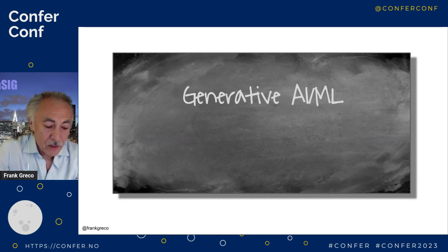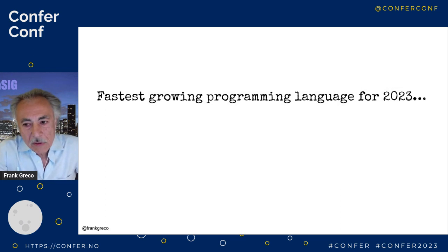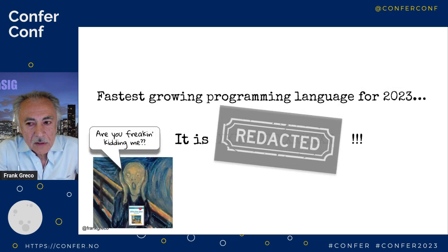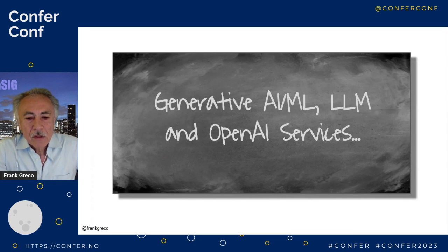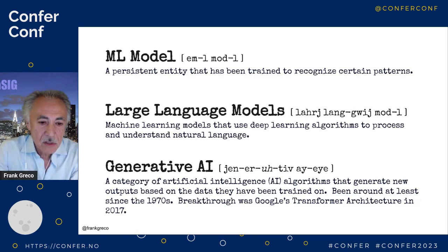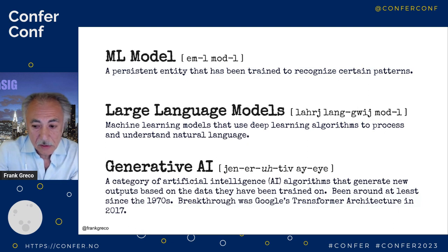Now let's talk about generative AI. What do you think the fastest growing programming language is for this year and next? It's not Java, not C++, not Rust. Let's dive in quickly to language models and OpenAI. We know what a model is — we just covered that. What's a large language model? It's a model that understands natural language. That's certainly what's behind ChatGPT and this latest craze with machine learning. Generative AI is a form of deep learning that generates something new based upon the model.